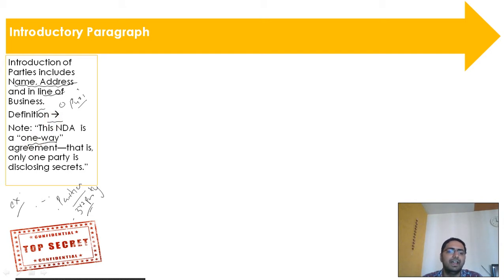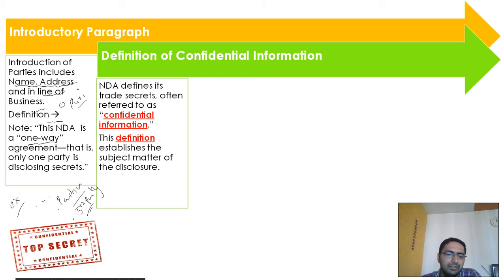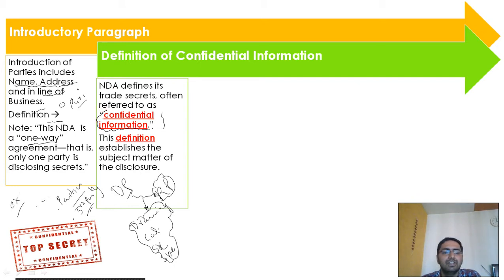The next clause is the definition of confidential information. The disclosing party gives certain confidential documents to the receiving party. What these confidential documents consist of — it might be drawings, calculations, source code, or specifications. All these items are defined under confidential information. These are the specific pieces of information shared by the disclosing party with the receiving party, and they are to be treated as confidential.